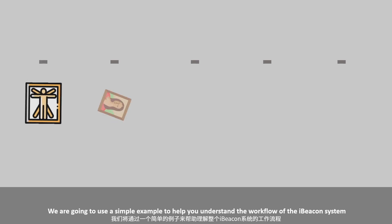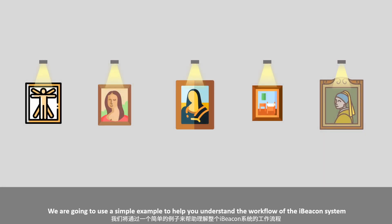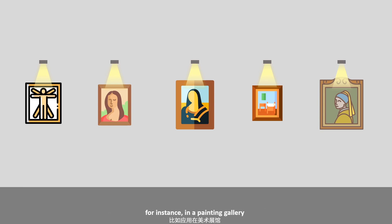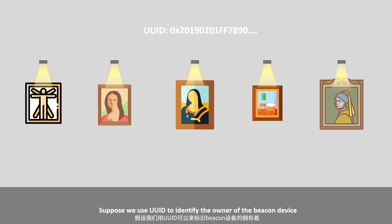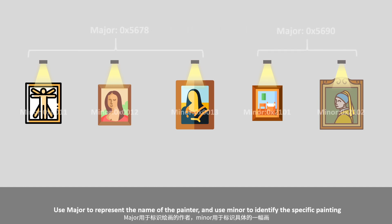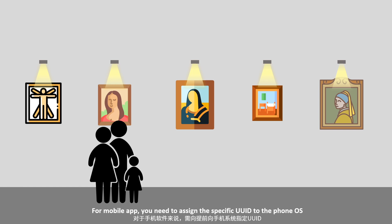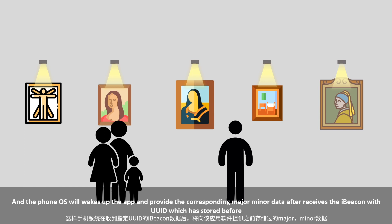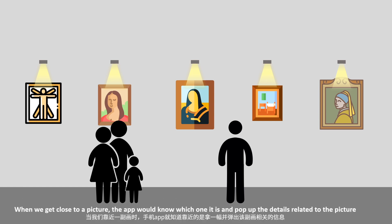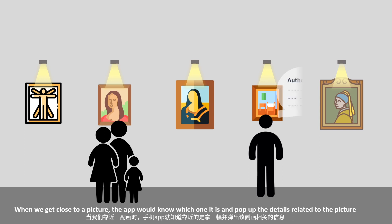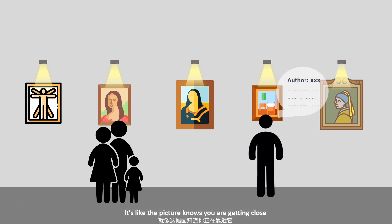Let's use a simple example to help you understand the workflow of the iBeacon system. In a painting gallery, suppose we use UUID to identify the owner of the beacon device, Major to represent the name of the painter, and Minor to identify the specific painting. We associate picture information with different Major/Minor combinations and store it on a cloud server. For a mobile app, you assign the specific UUID to the phone OS, which will wake up the app and provide the corresponding Major/Minor data after receiving an iBeacon with the stored UUID. When you get close to a picture, the app will know which one it is and pop up the details. It's like the picture knows you are getting close.